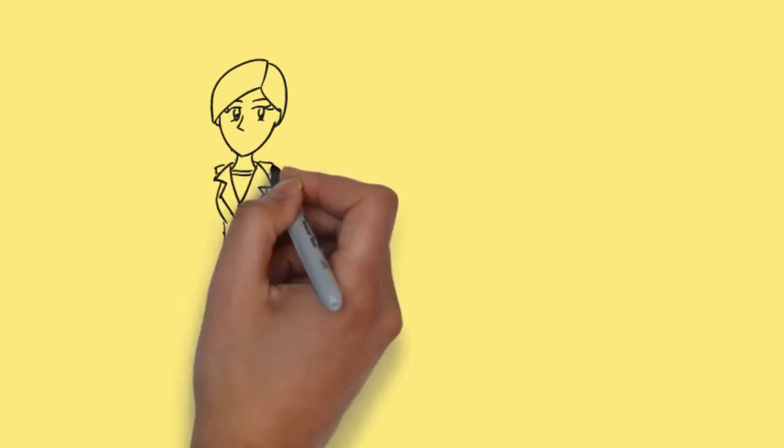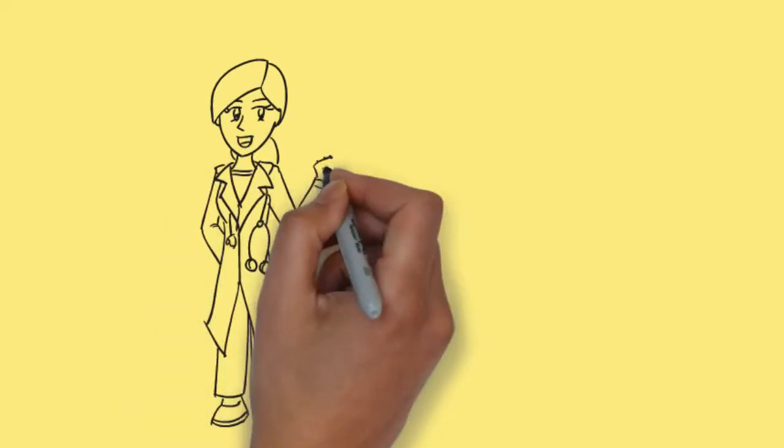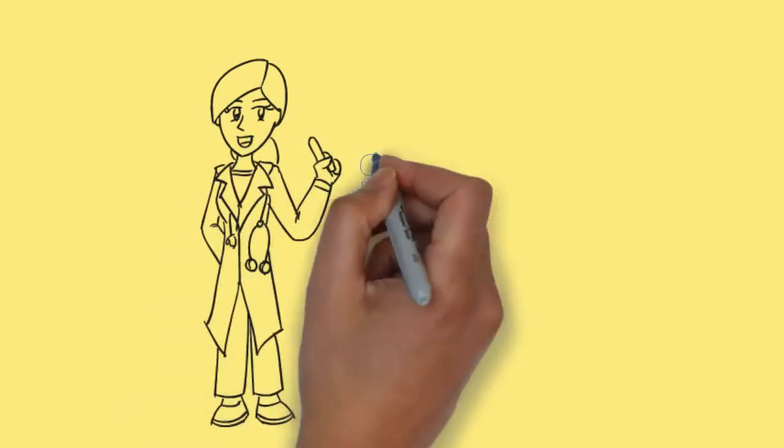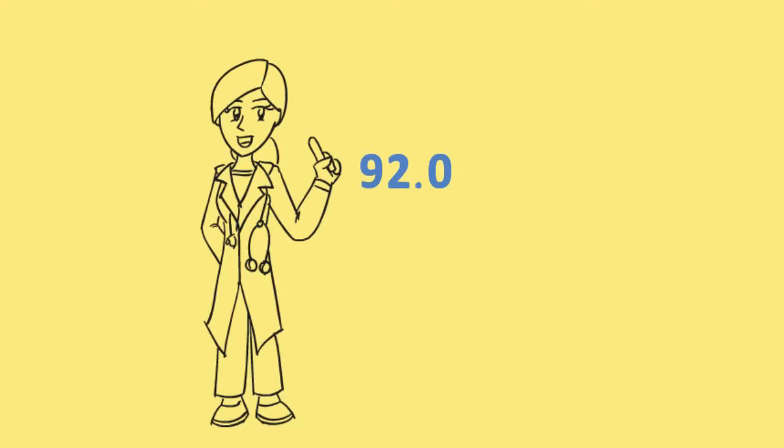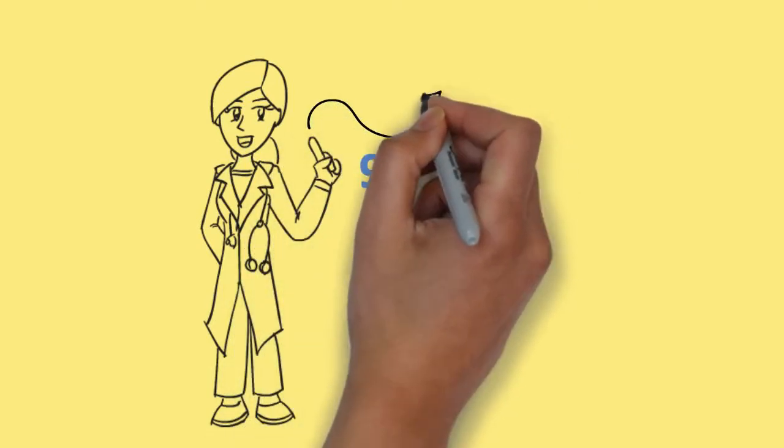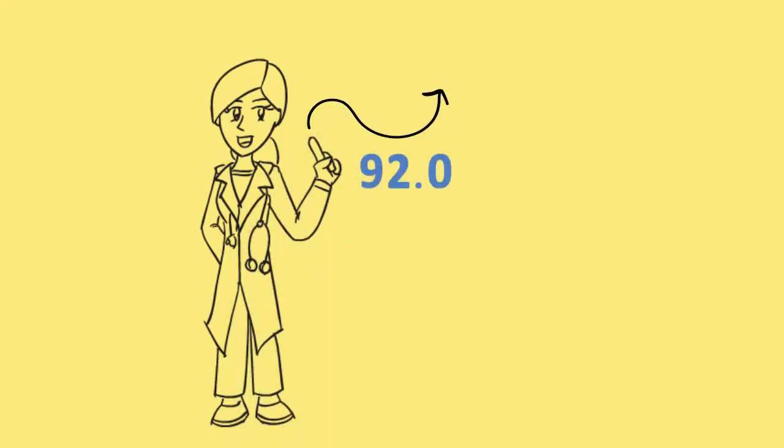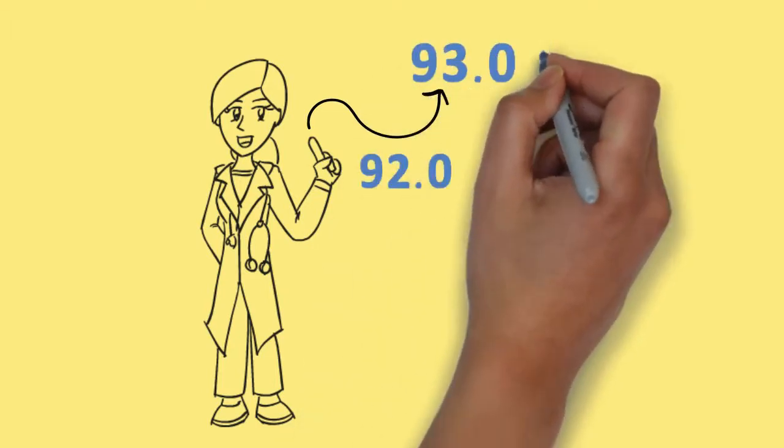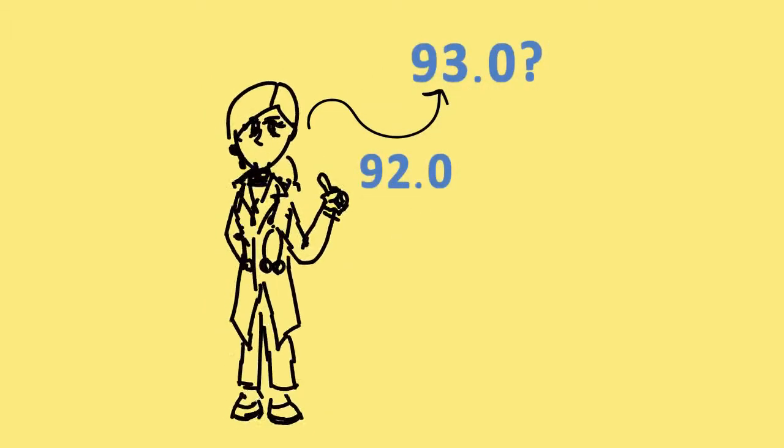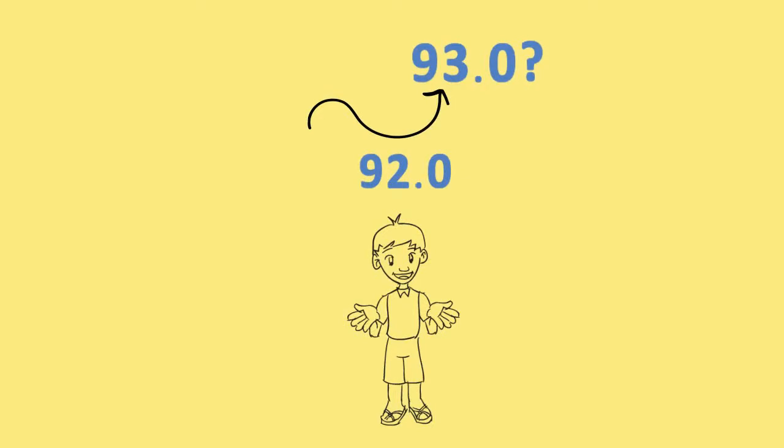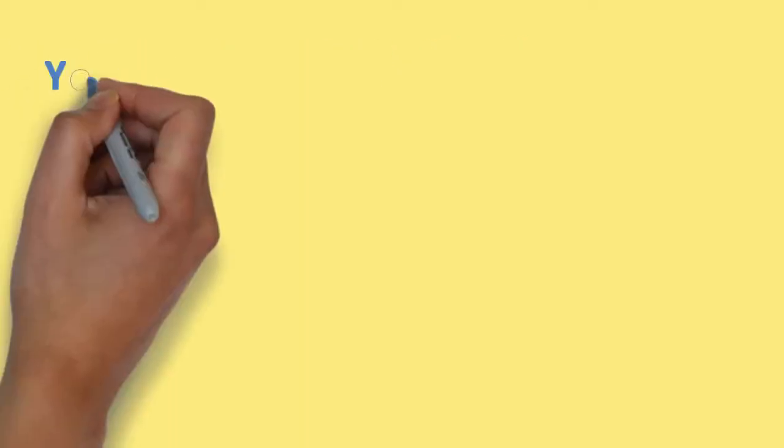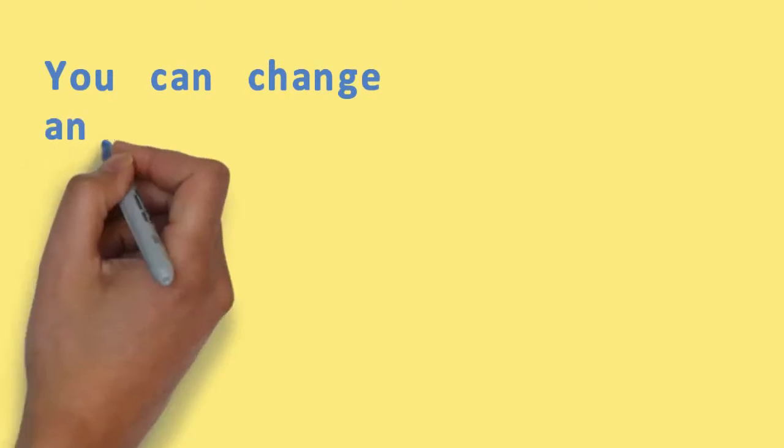If you put a sensor on your fingertip and it measured your temperature as 92.0 degrees, could you learn to increase the temperature to 93.0 degrees? Even a four-year-old child can learn to do that. It's very simple to do. You can change anything that can be measured.